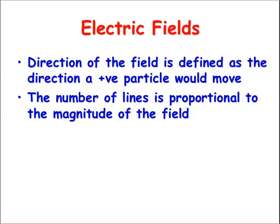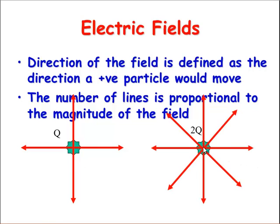Second one, the number of the lines is proportional to the magnitude of the field. Basically, if we had some charge Q and we drew that many lines in, if we had double the charge, we'd represent that by drawing twice as many lines. If it was three times the charge, we'd need three times the number of lines. So the density of lines represents how strong it is.